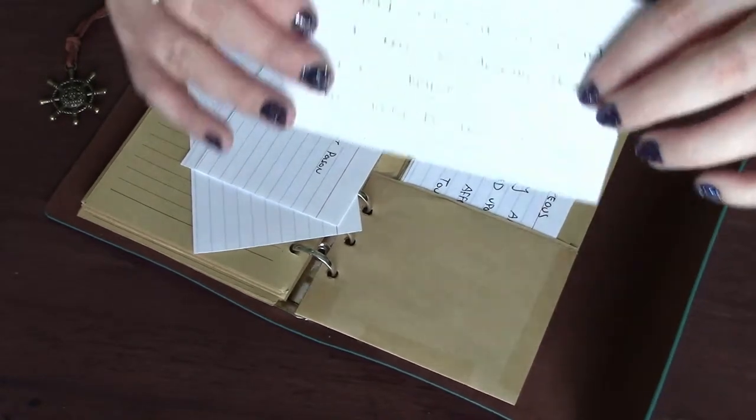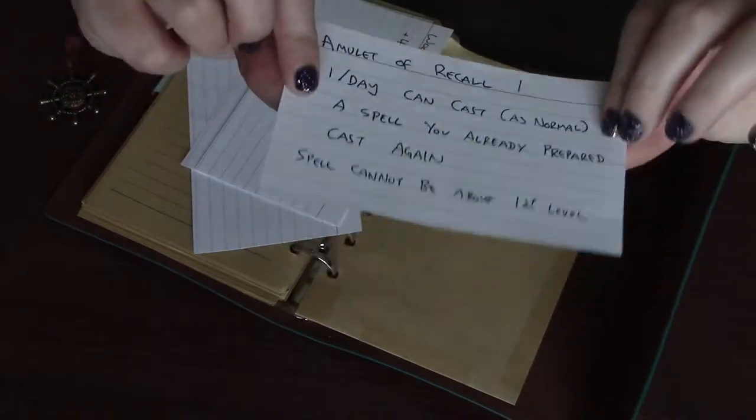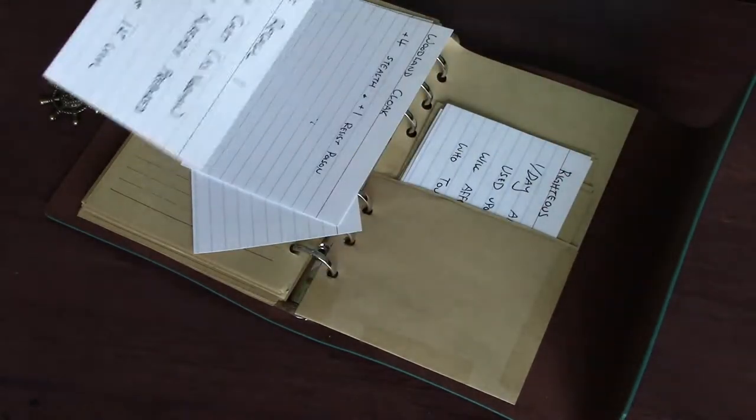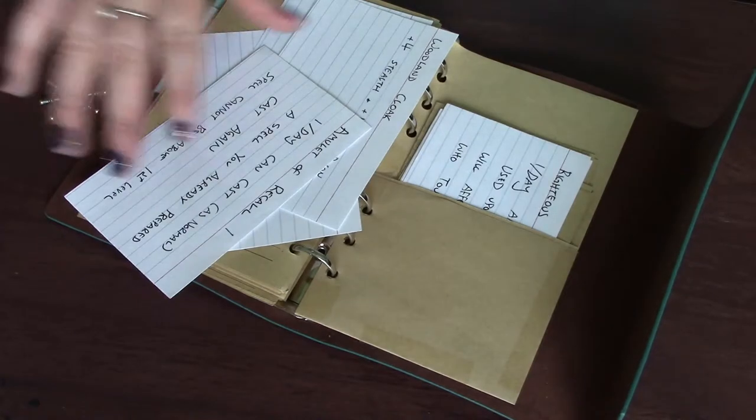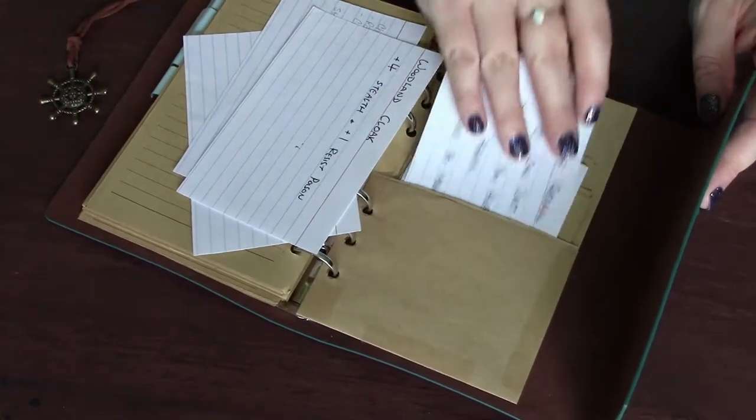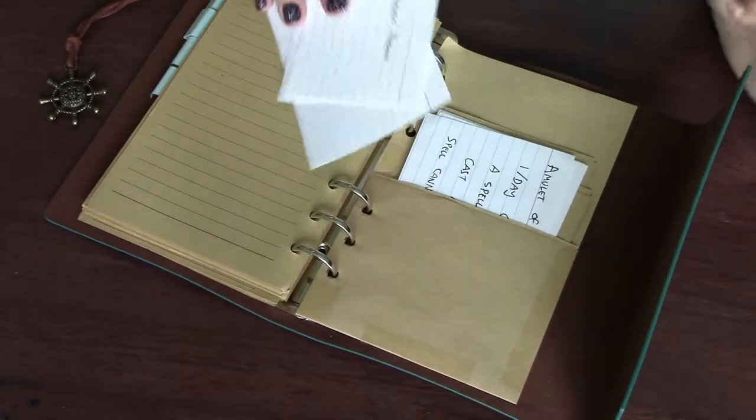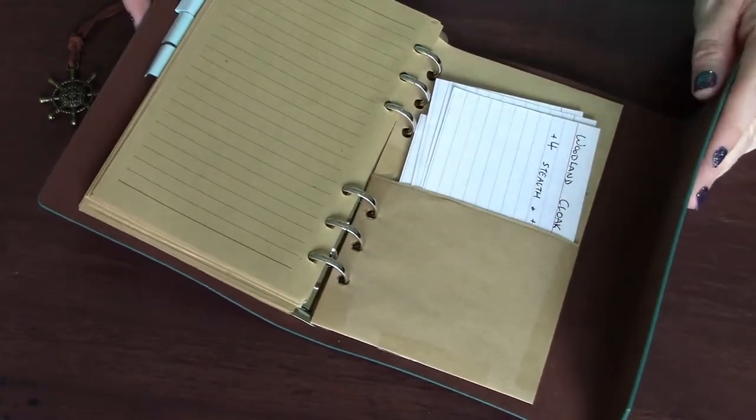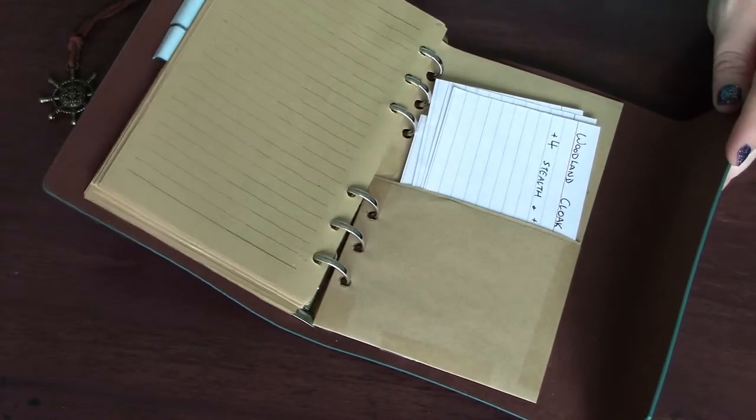So, for example, I have this item that lets me recall a spell once a day, so I can have this out, and I keep it out in front of me while I'm playing. And then if I use it, I just tuck it back in my notebook, and I know it's gone for the day. So this little spell book is pretty handy for your prepared casters.